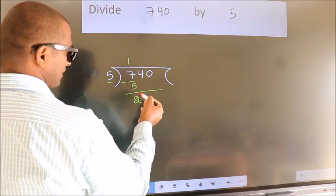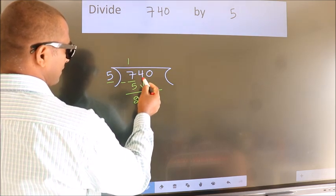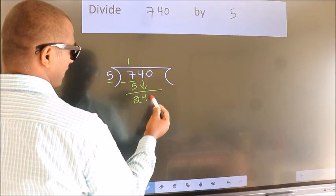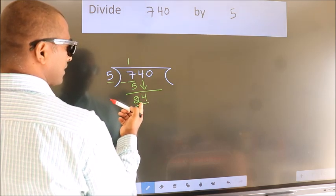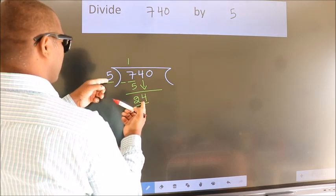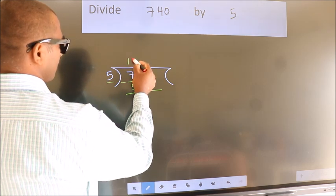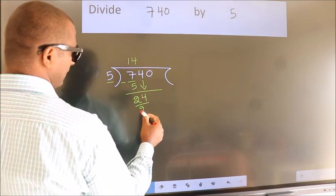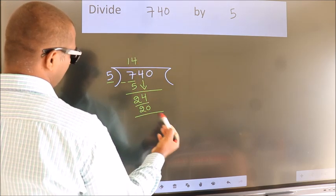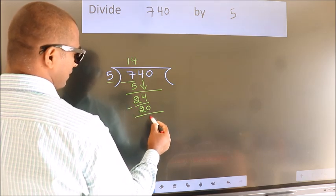After this, bring down the beside number. So, 4 down. So, 24. A number close to 24 in 5 table is 5 fourths 20. Now we subtract. We get 4.